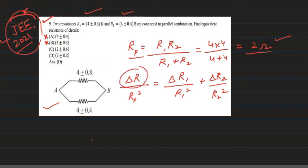We need to find out delta R. So here delta R upon Rp square, since we already found that to be 2, it is written as 2 square and it is equal to delta R1. So this is our delta R1 that is 0.8, so it is 0.8 divided by R1 that is 4.